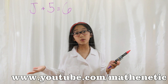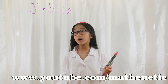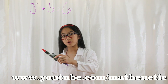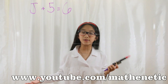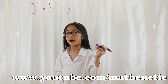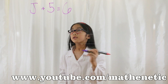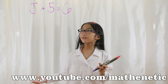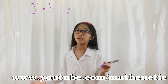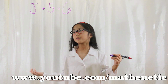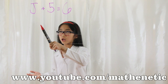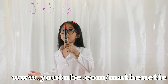What do you notice about the equation? Well, the plus 5 is on the left side of the equation. To cancel that out, you must subtract 5 on both sides of the equation. So plus 5 and minus 5 cancel out. Then 6 minus 5 equals 1. You bring the j down and the equal sign down.